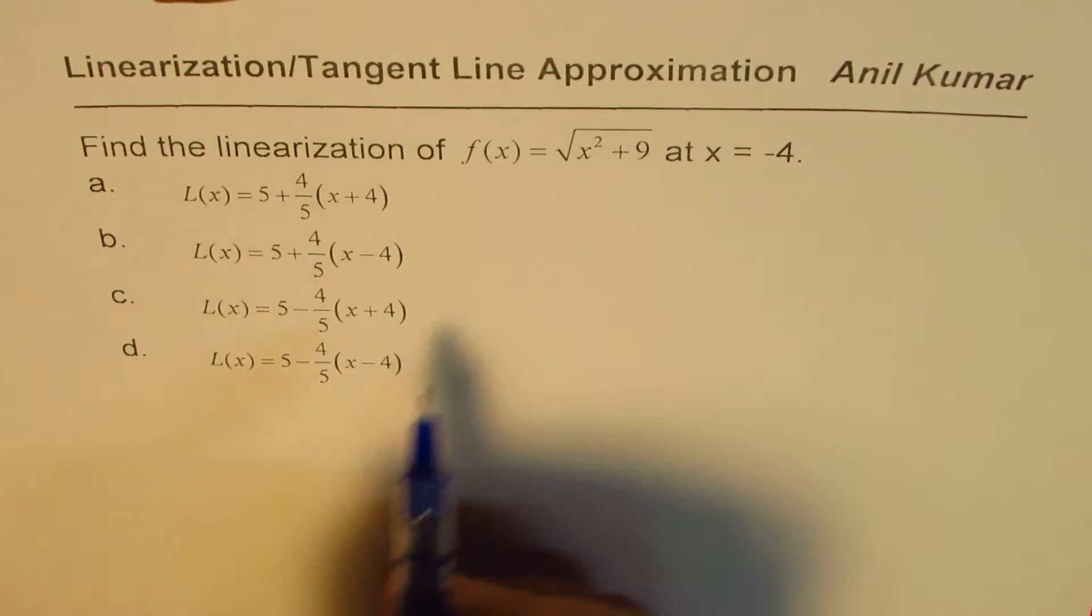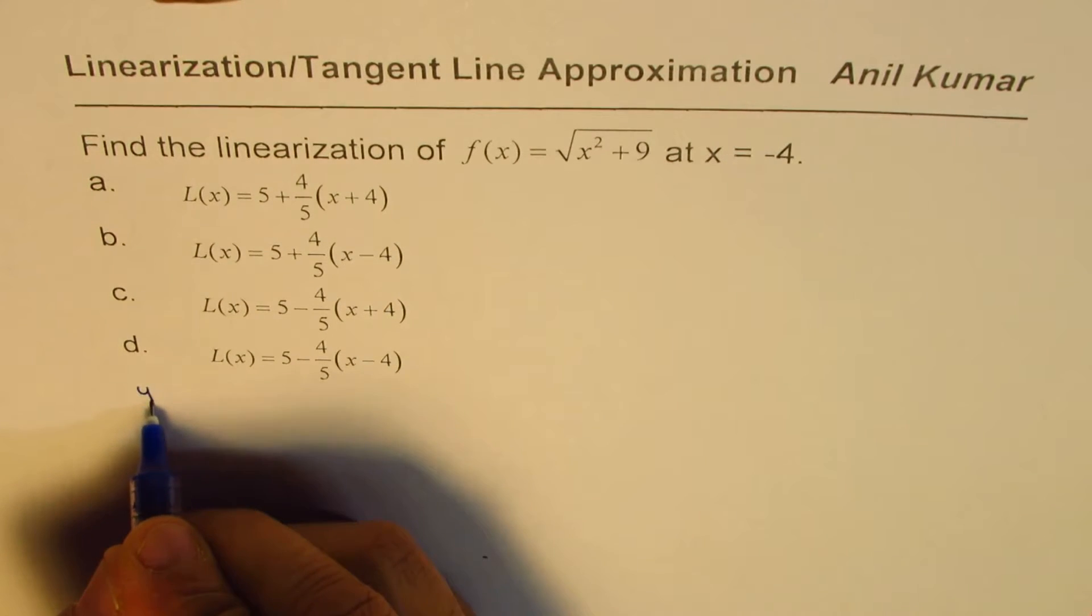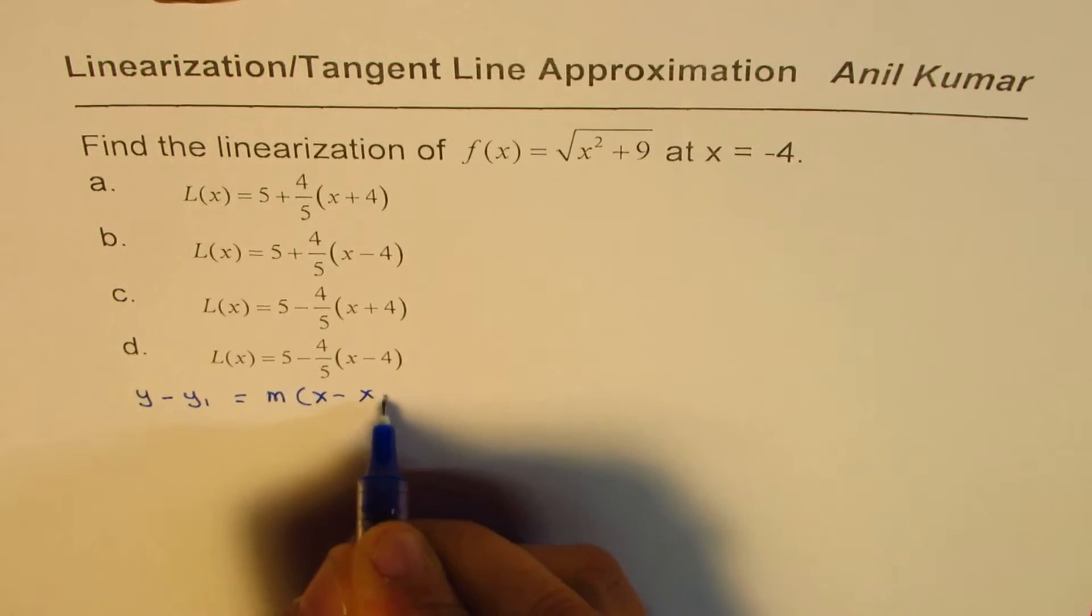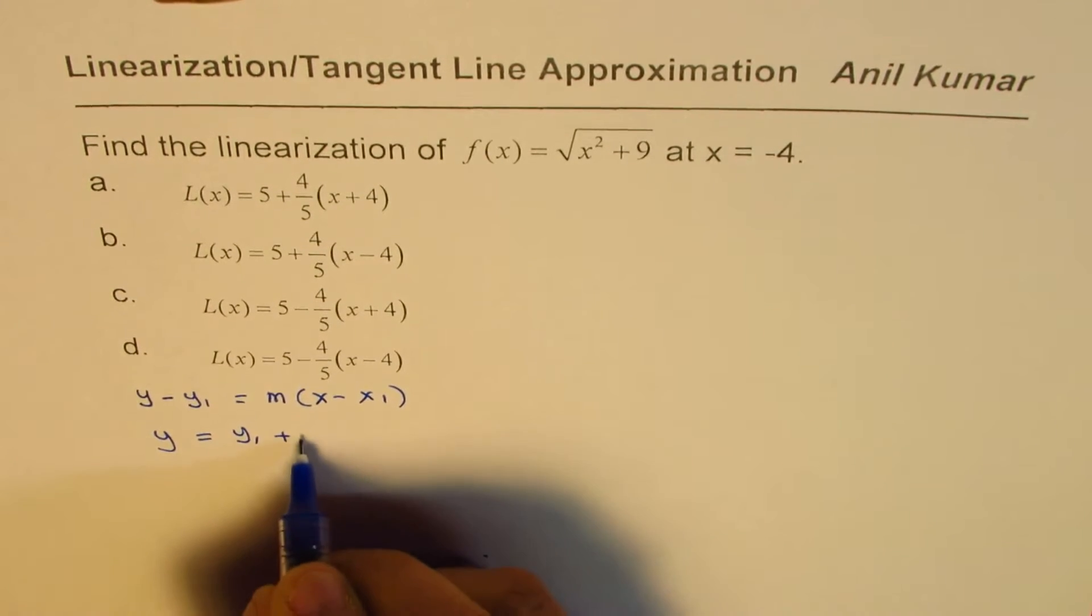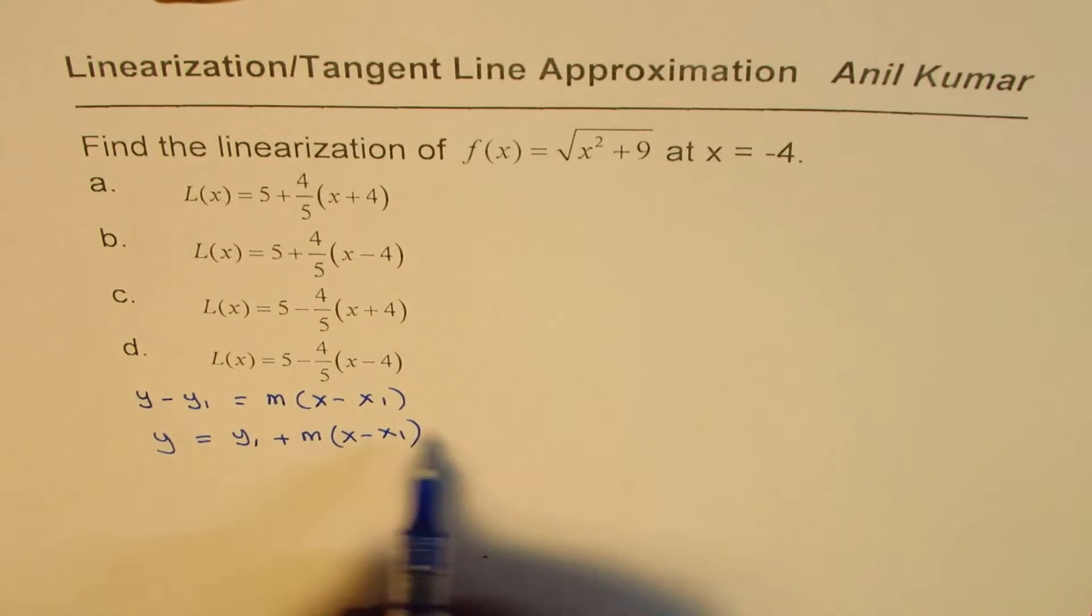by tangent line approximation. So basically, in this method, we use the equation of the tangent line, which could be given as y minus y1 equals to m times x minus x1. Rearrange to get y equals to y1 plus m times x minus x1.